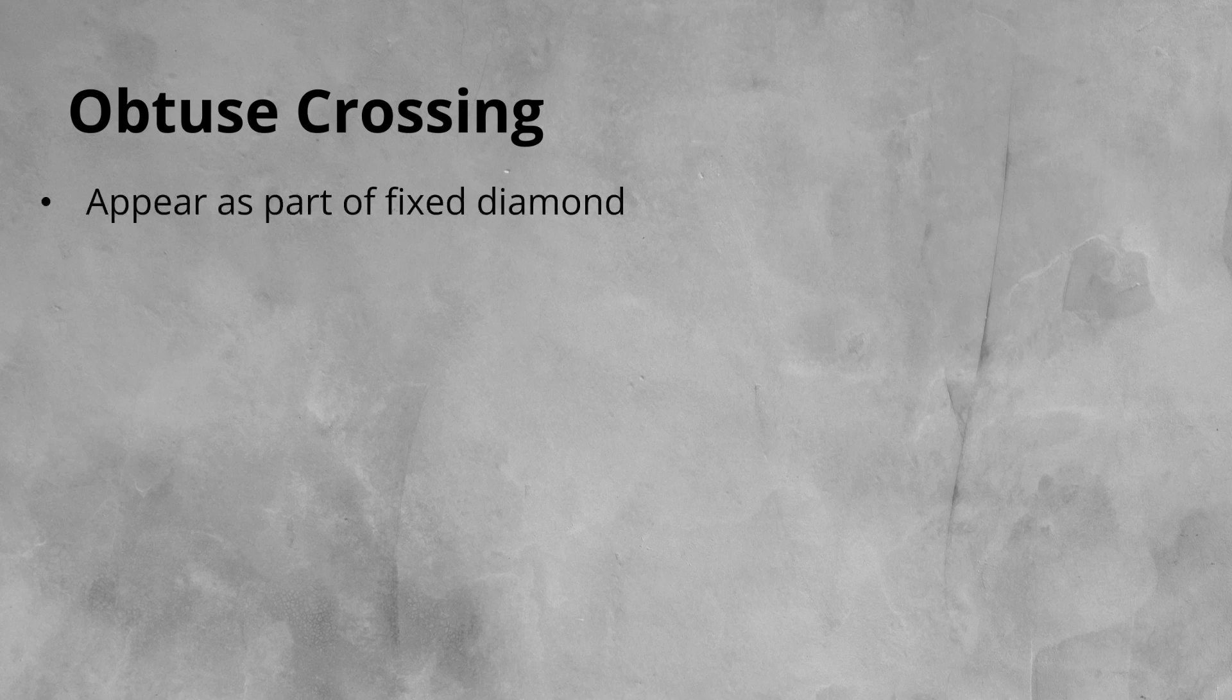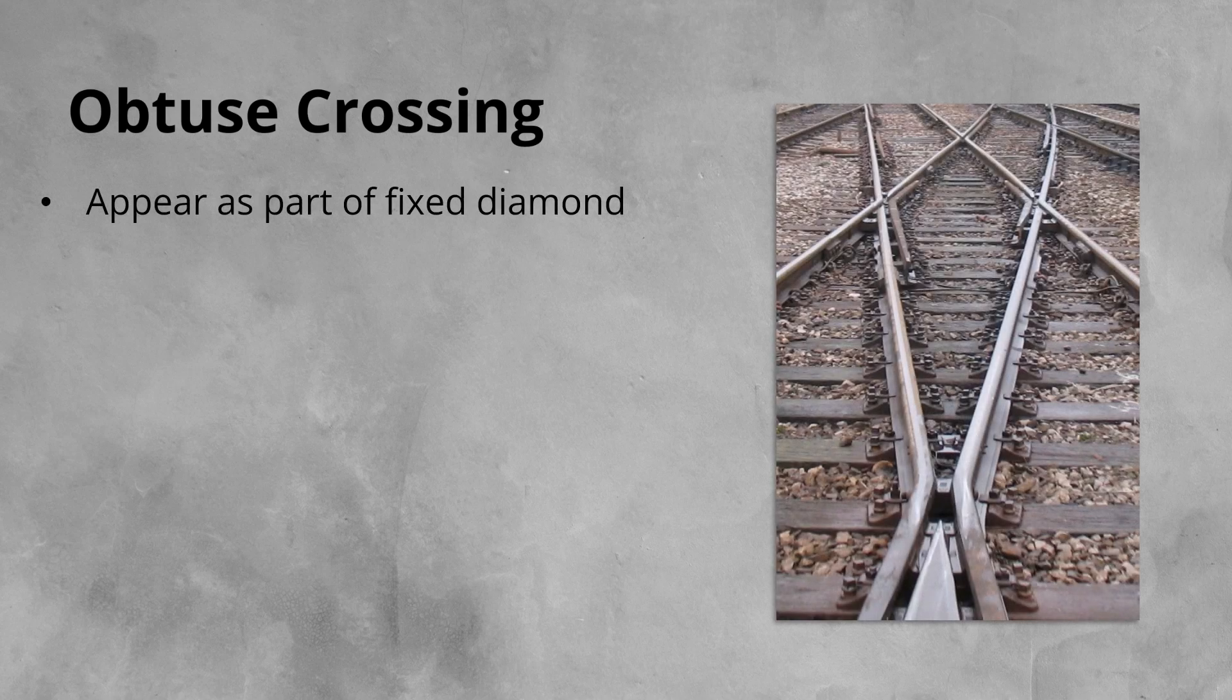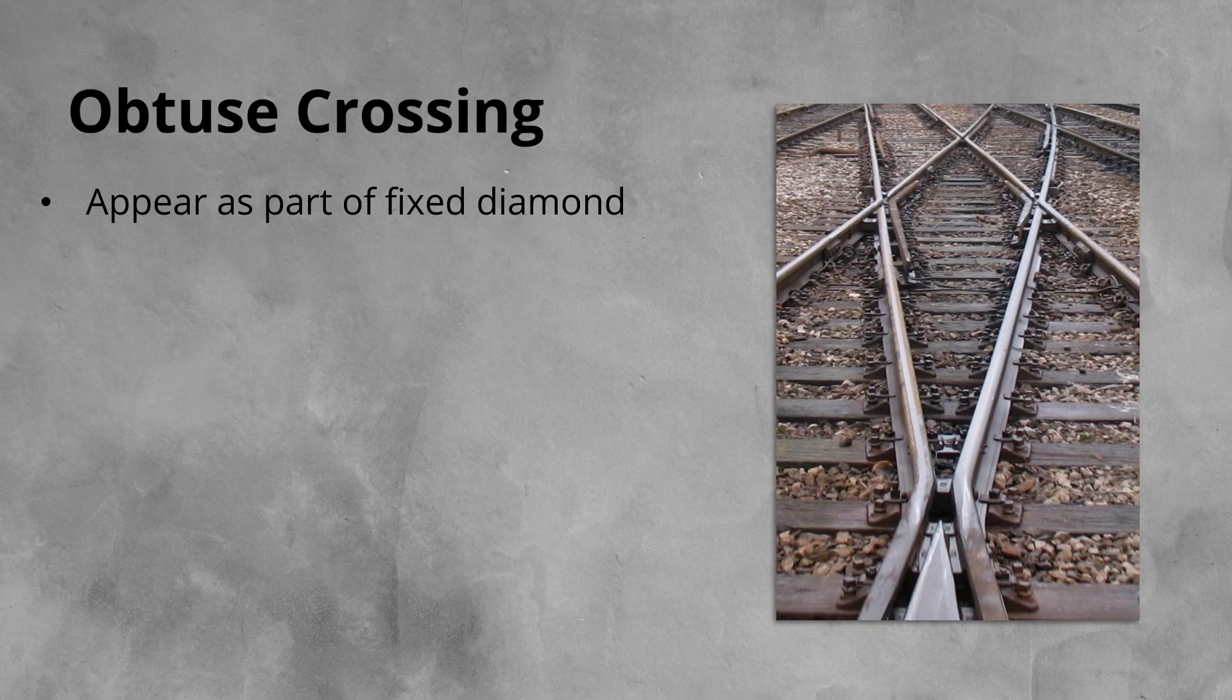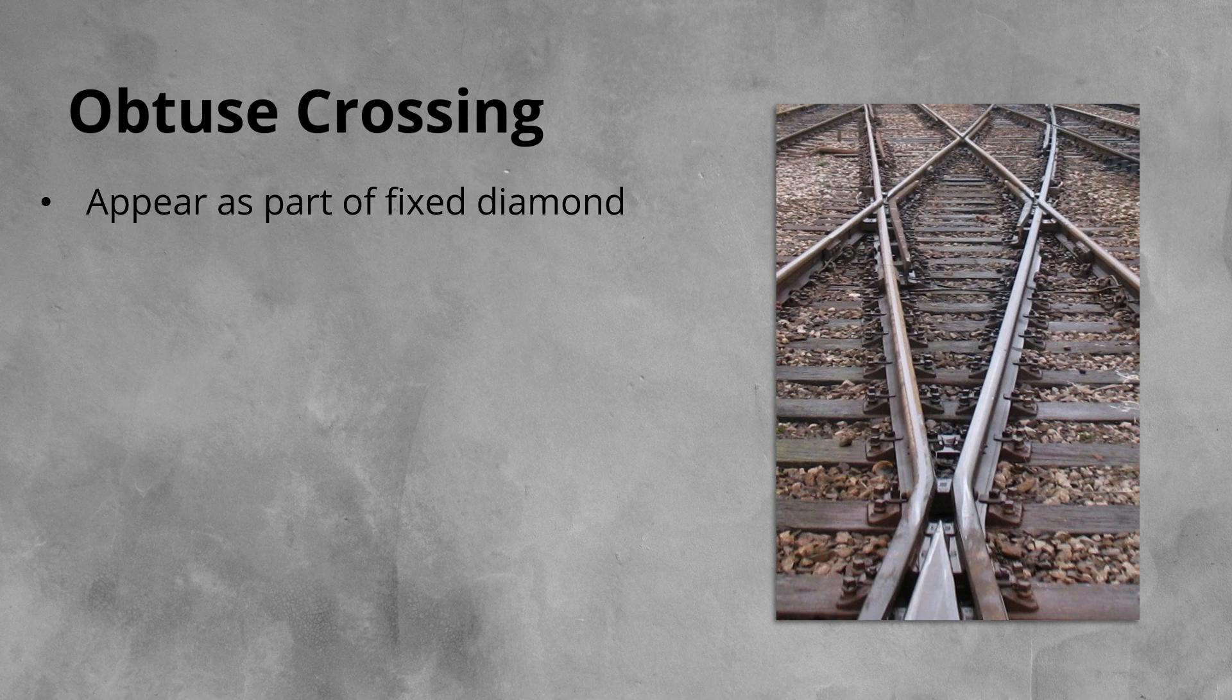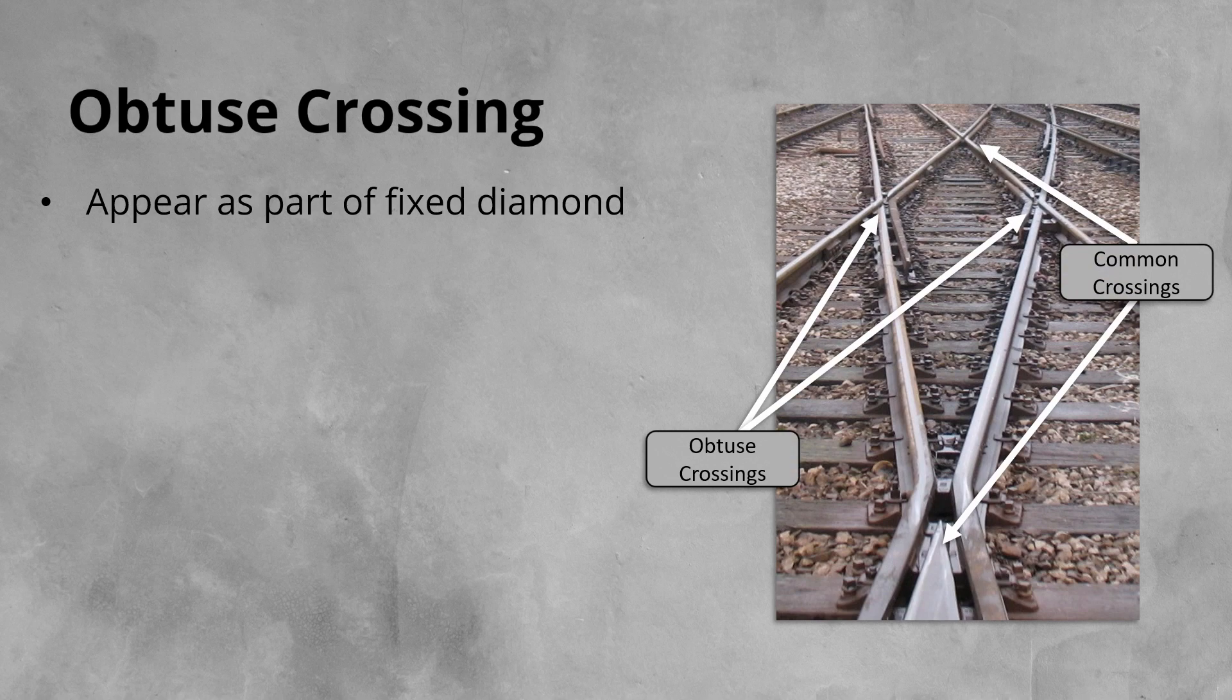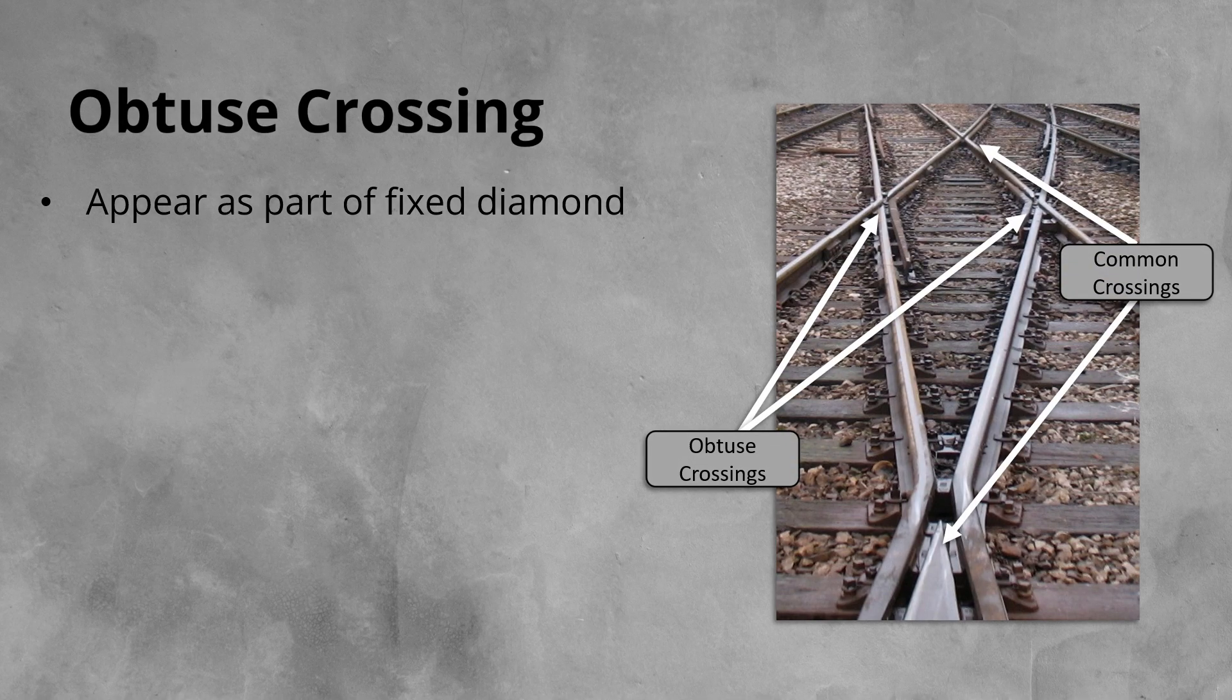Next up is the obtuse crossing. Obtuse crossings appear in one place, as part of a fixed diamond layout. This is found when one line is crossing another. It is formed of two obtuse crossings and two common crossings in, yes you guessed it, a diamond shape.